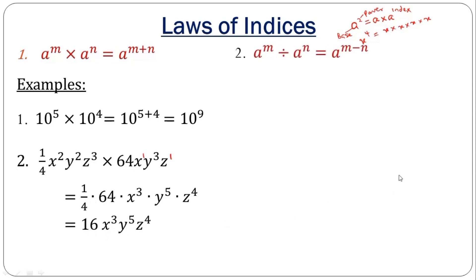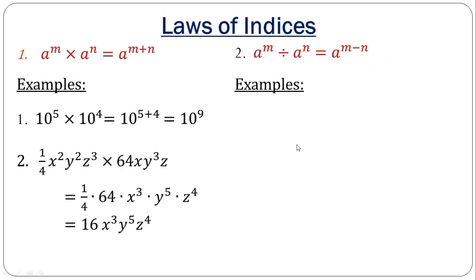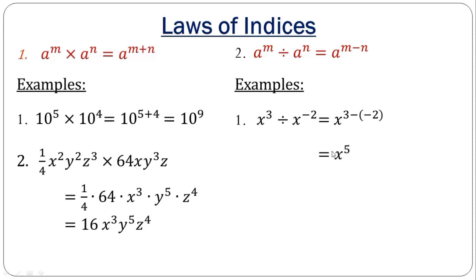The second rule is called the division rule. If I have index numbers dividing themselves and they have a common base, all I need to do is subtract the powers. So in multiplication you add; in division you subtract. Look at these examples: I have one number divided by another. All I need to do is take one of the bases and have 3 minus (minus 2) — and of course minus minus is plus — so 3 plus 2 gives us 5.